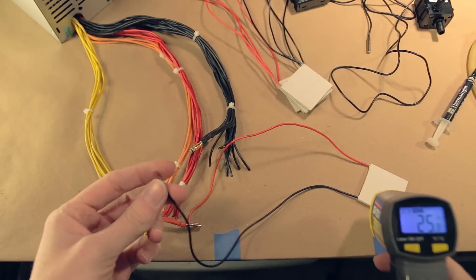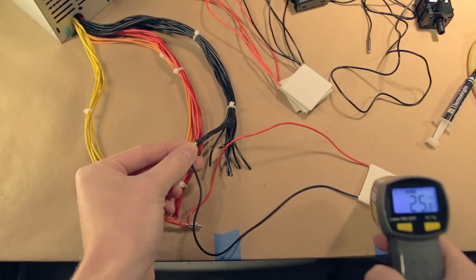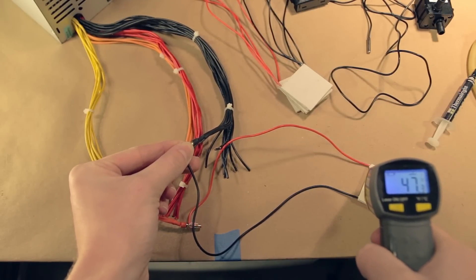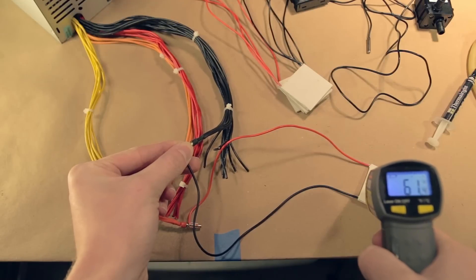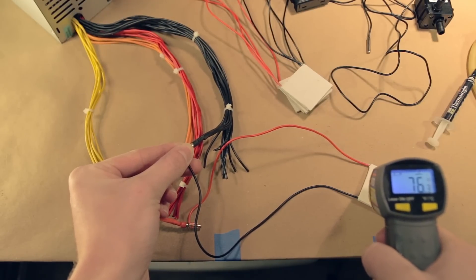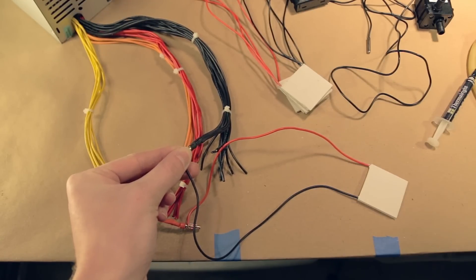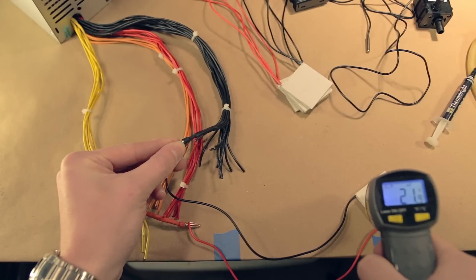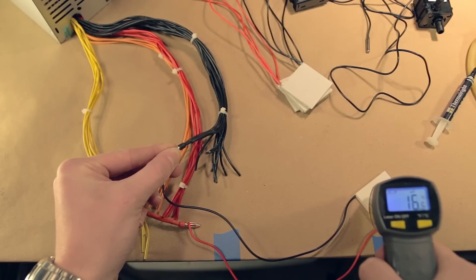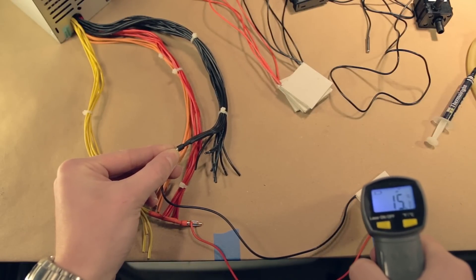These chips operate based on the Peltier thermoelectric effect. Whenever an electric current is applied to the chip, heat is transferred from one side to the other. You can see that when I connect the electricity here, this side of the chip gets hot. If I flip it over, the other side gets cold whenever electricity is applied.